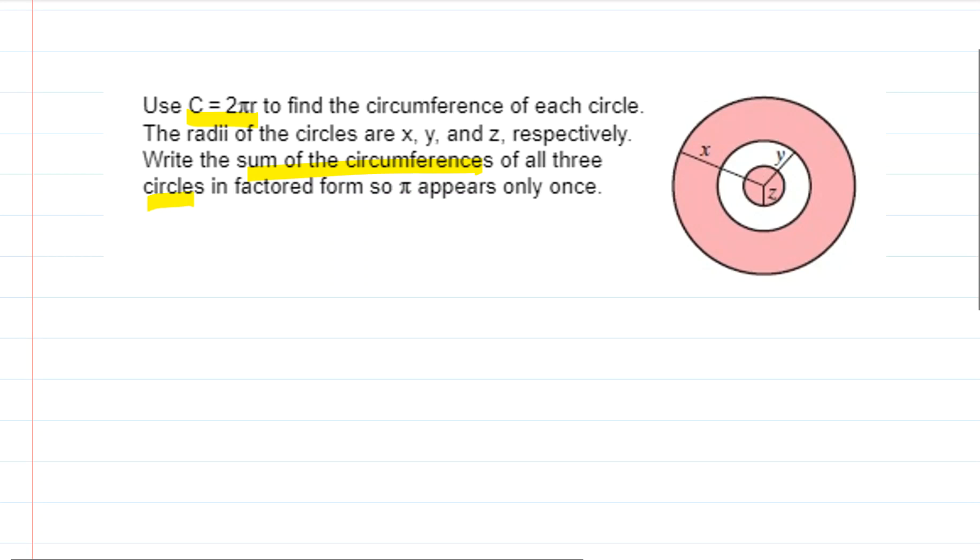So let's start with writing the circumferences. Well, what are the different circumferences? We know that C equals 2πr, right, and we have three different radii here.